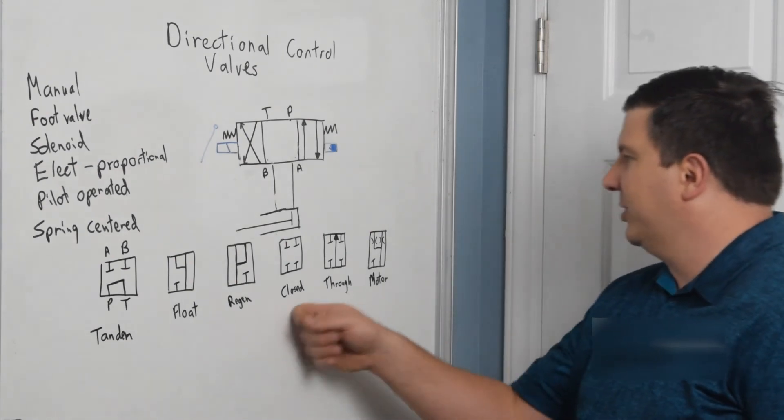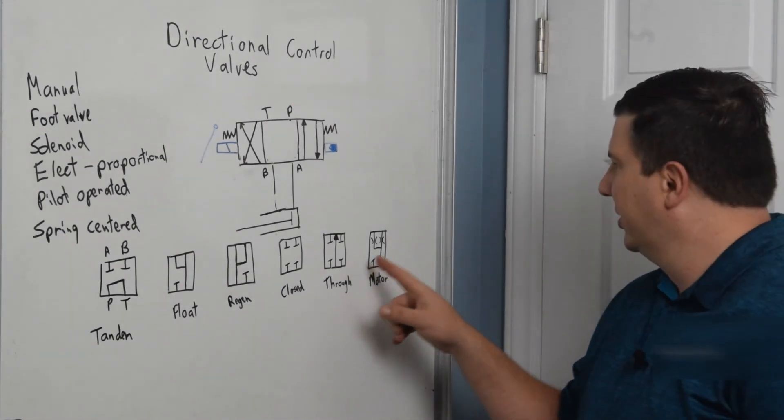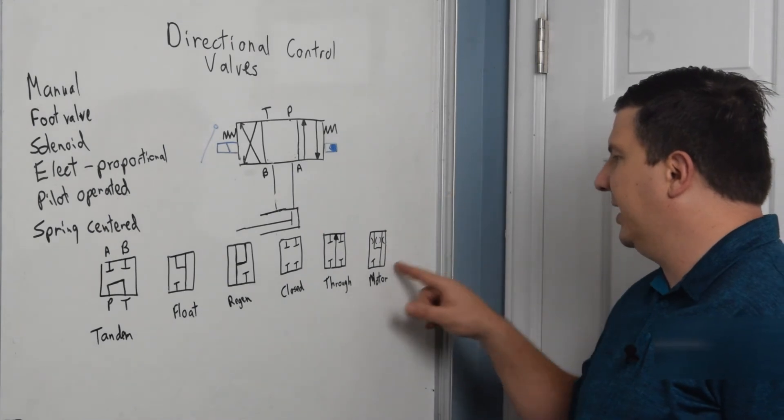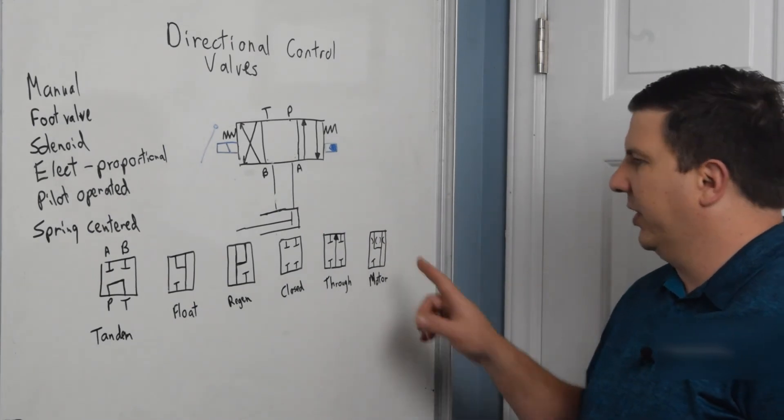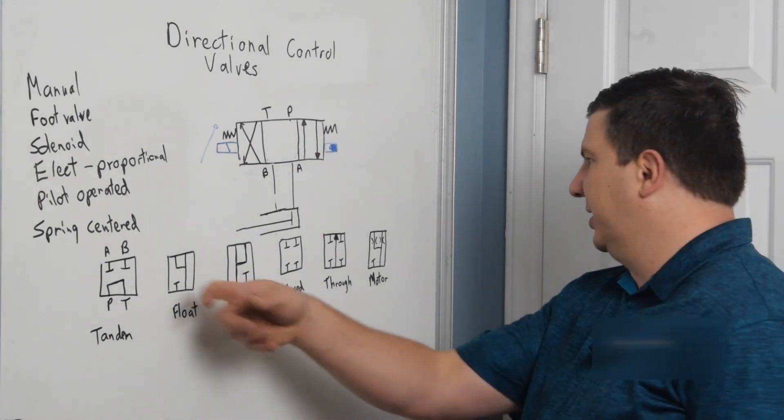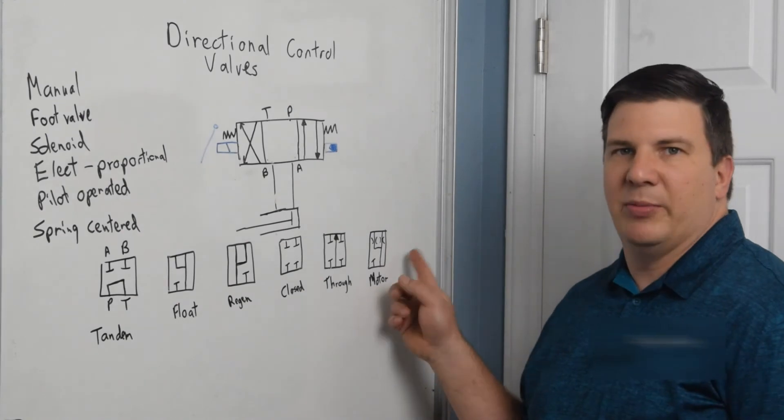A better option is to use a motor spool in that case where you would block off your pressure, but your A and B will bleed to tank. The other option is to use a float one where it's basically just a, you get higher flow rates here than this one. Motor spools are great.